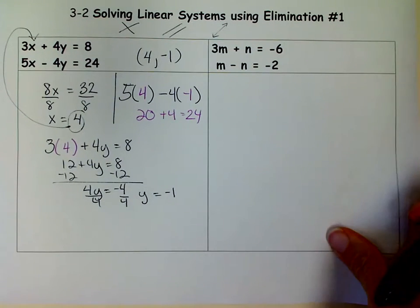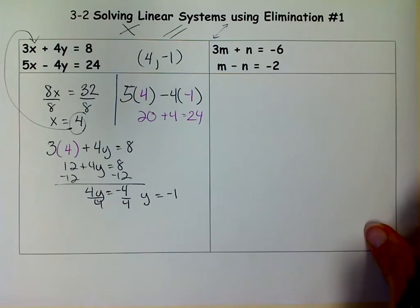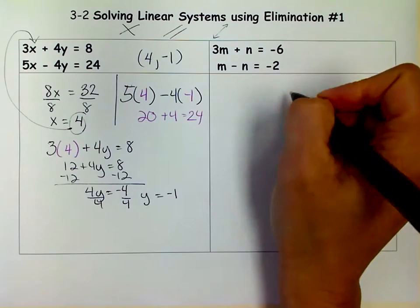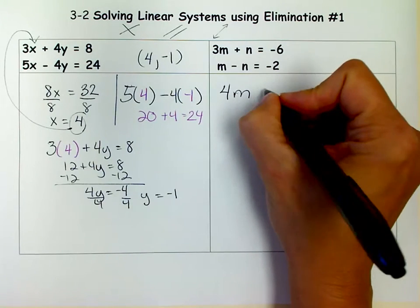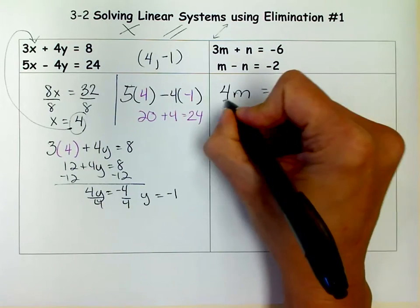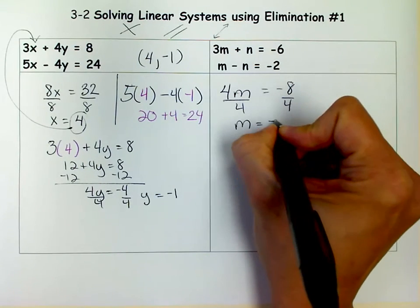You'll notice that the next one doesn't say x and y, it says m and n. But we do it the same way. The first two steps are done, so we're just ready to add. We're going to say 4m, the n's cancel, equals negative 8. And when we divide both sides by 4, I get m equals negative 2.